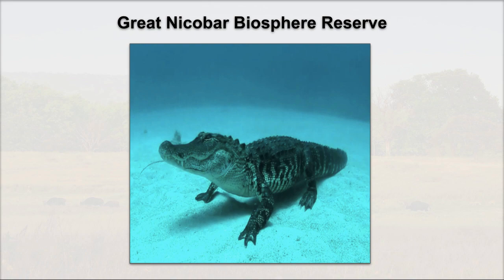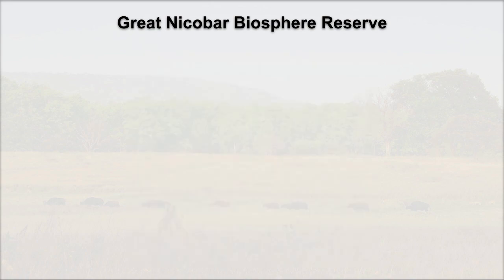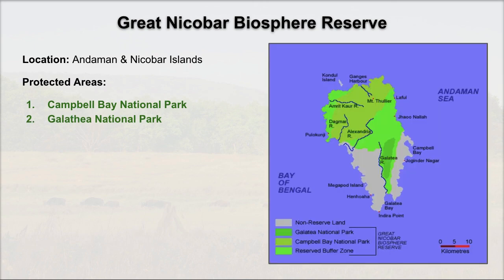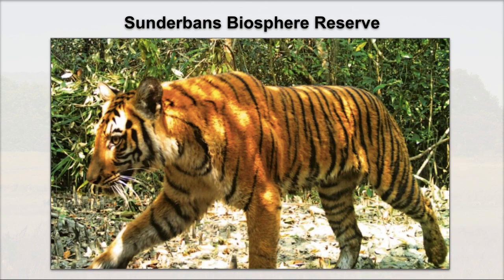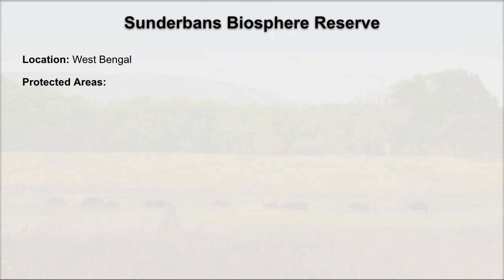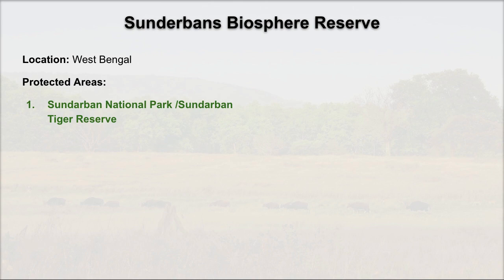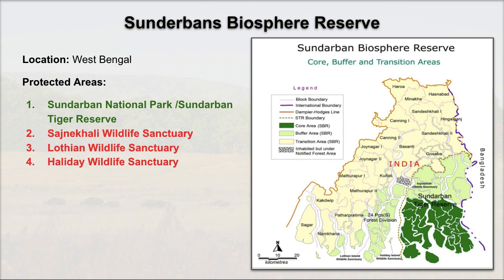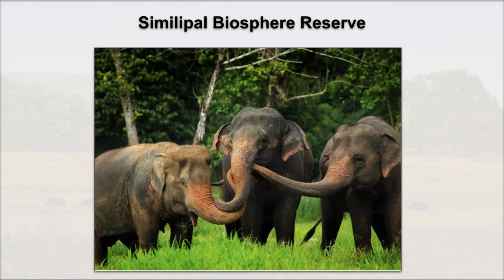Next in the series is Great Nicobar Biosphere Reserve. The key fauna is the Saltwater Crocodile. It is located in Andaman and Nicobar Islands. The protected areas are Campbell Bay National Park and Galathea National Park, which you can see in the zoomed-out map. Then Sundarbans Biosphere Reserve — the key fauna is the Royal Bengal Tiger. The protected areas are Sundarbans National Park and Tiger Reserve, Sajnekhali Wildlife Sanctuary, Lothian Wildlife Sanctuary, and Halliday Island Wildlife Sanctuary.